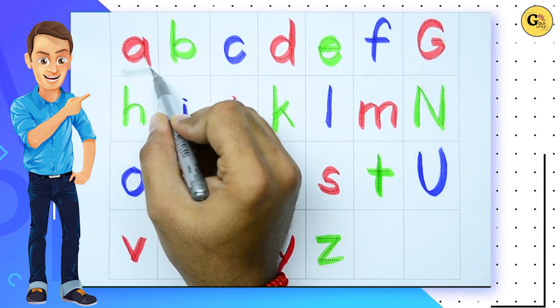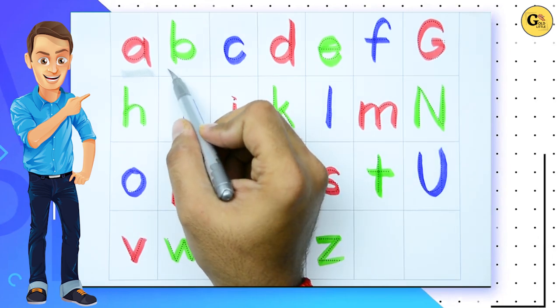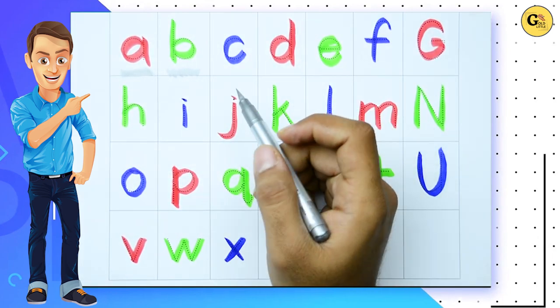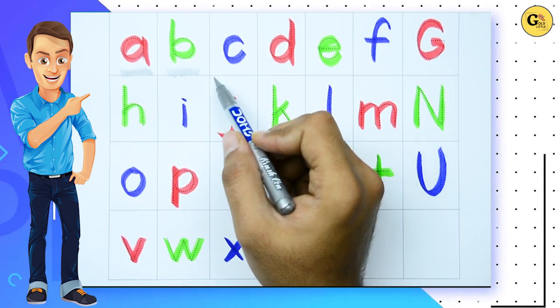A. A for apple. It's small f with red color. B. B for ball. It's small b with green color. Blue color.